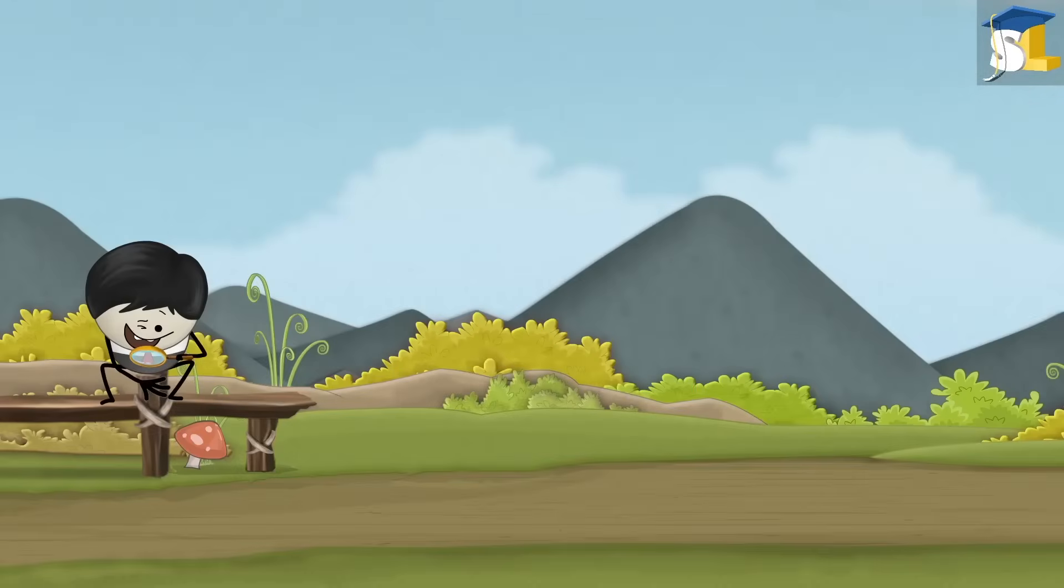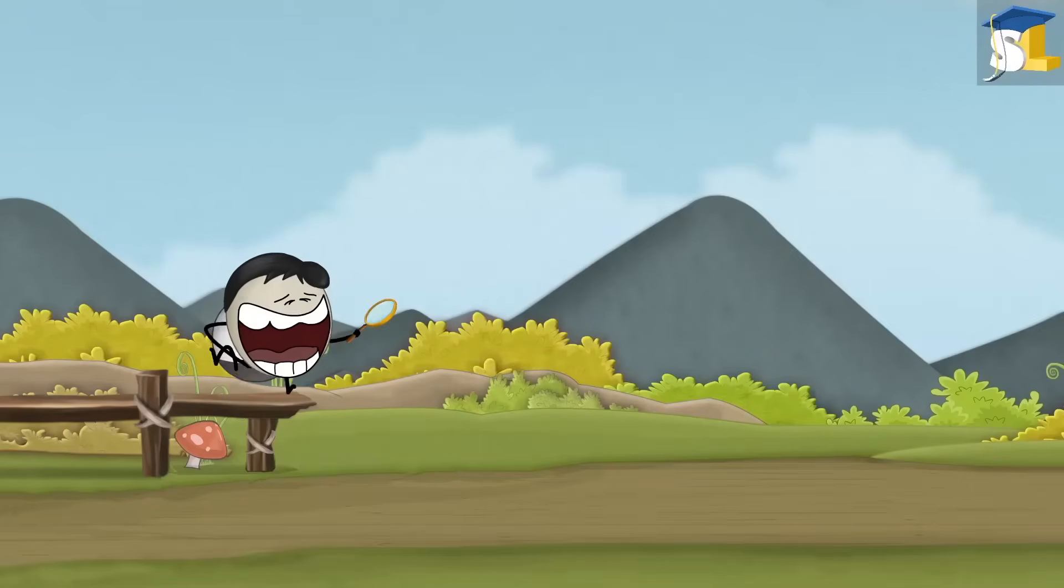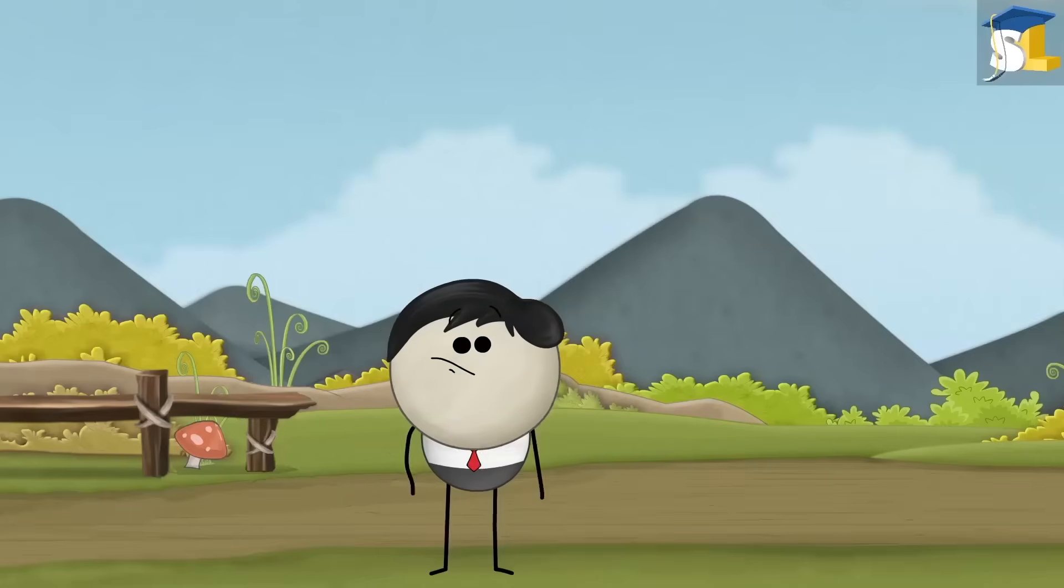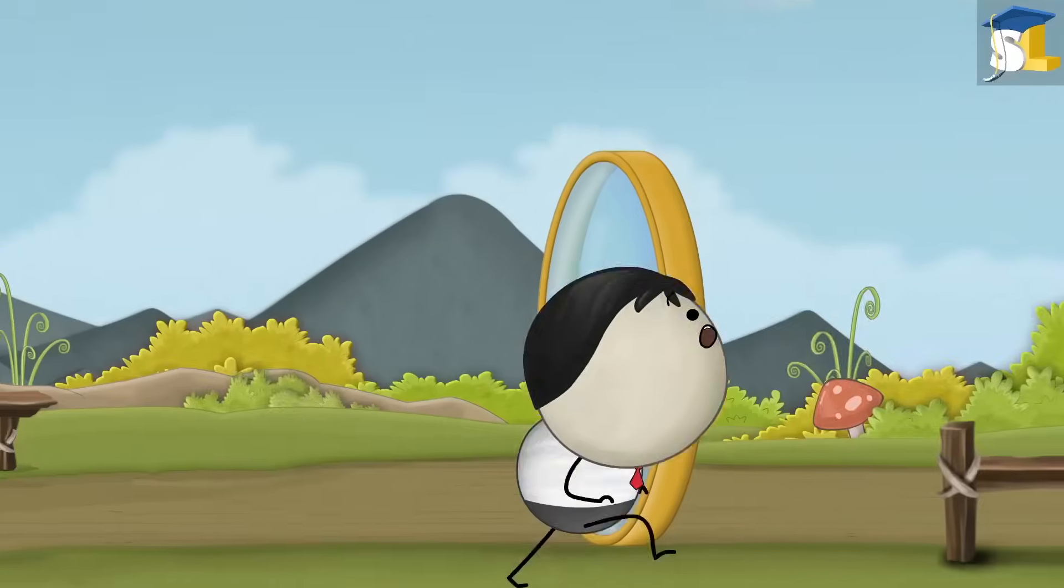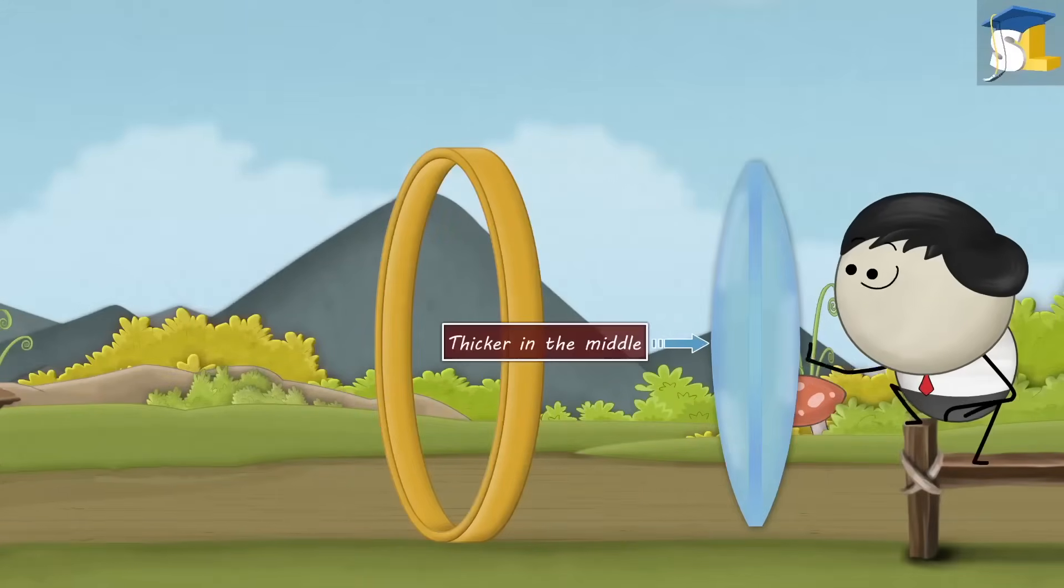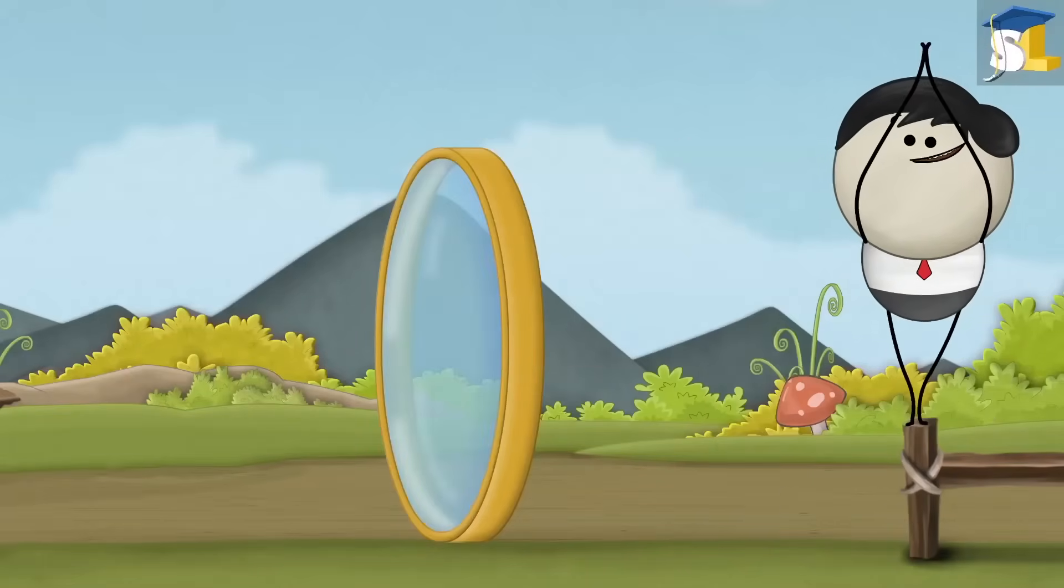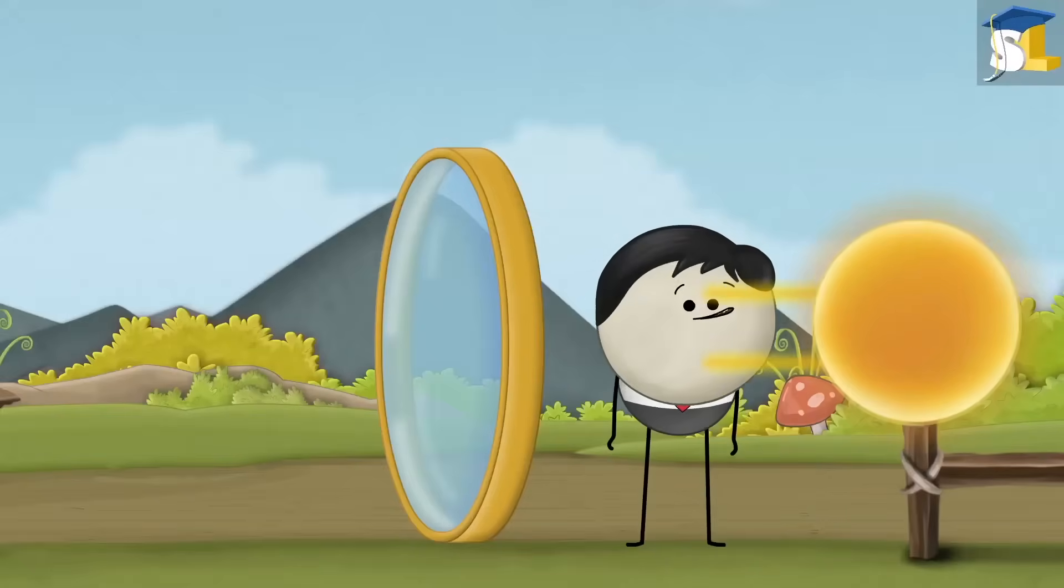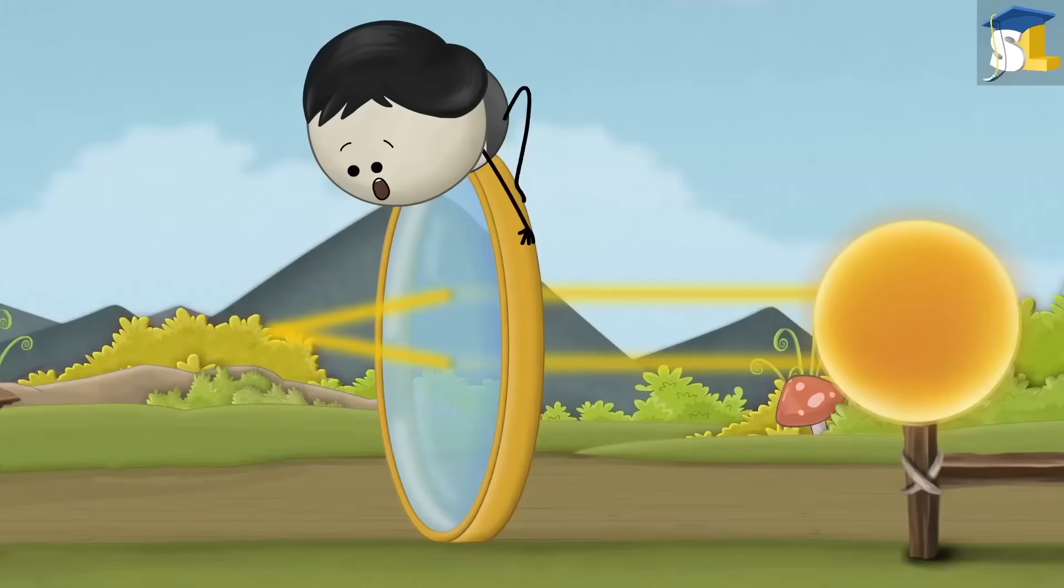Convex lens. Can a magnifying glass burn paper? I think you have gone nuts. No, it is possible. What? But how? It is because a magnifying glass is actually a convex lens. A convex lens is thicker in the middle and thinner at the edges. Like a fish? Absolutely. This shape of the convex lens makes the parallel rays of sunlight to refract such that they converge or come together at a point.